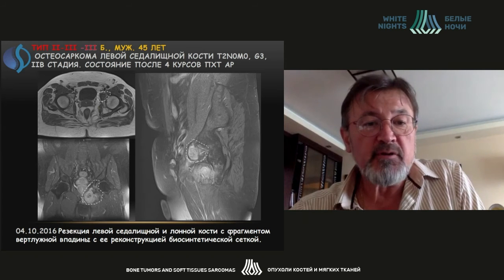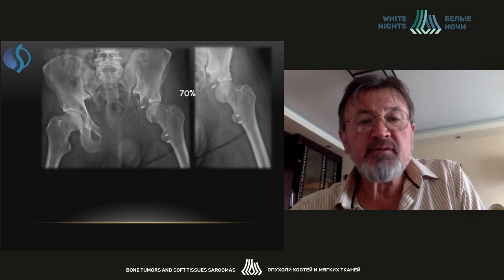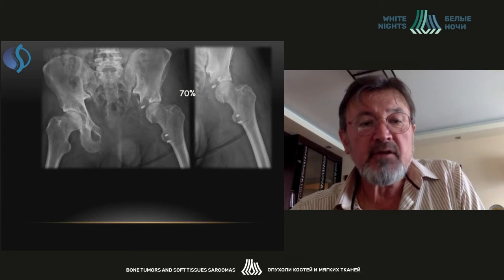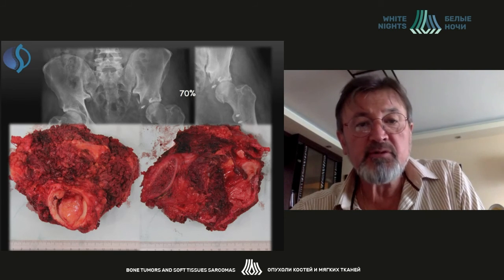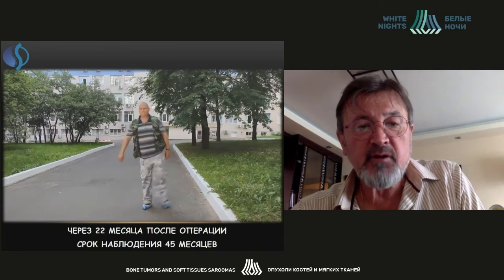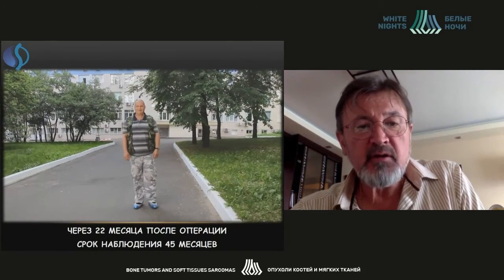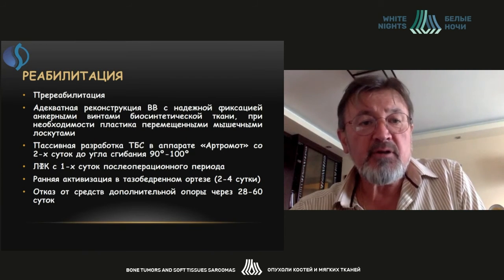The fifth case is a 45-year-old patient with a tumor growing into the acetabulum. Four courses of chemotherapy were given. During surgery we needed to resect approximately 70% of the acetabulum, leaving only a very small fragment. The functional outcome at 22 months post-op shows the patient is limping and uses a cane. He has attended follow-up visits for 45 months with no disease progression.